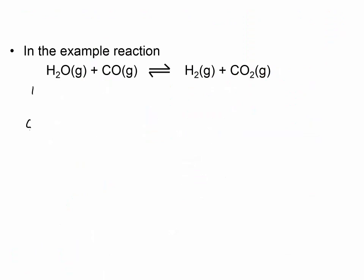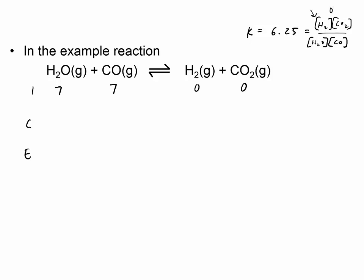Here's our reaction. Initially we had seven of H₂O and seven of CO, and zero each of the products. Our K value is 6.25. K equals the concentration of H₂ times CO₂ divided by H₂O times CO. If we plug these numbers in, we have zero in the numerator, so we know this reaction must go to the right over time. We'll see in the future that products aren't always zero initially, and we calculate Q, the reaction quotient, to determine which direction it goes.